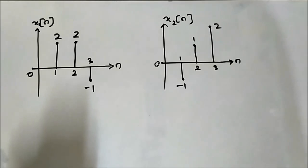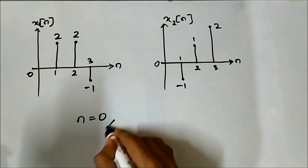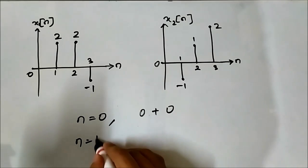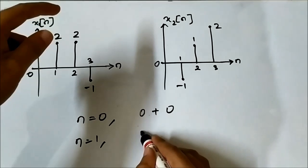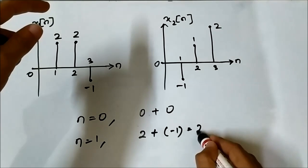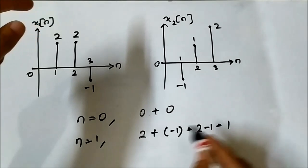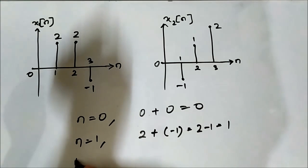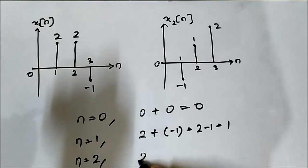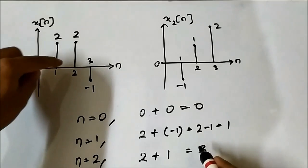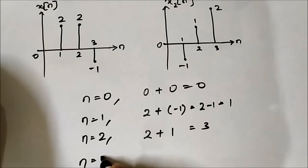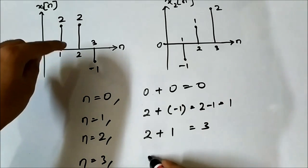We simply perform addition at the respective points. At n=0 it is 0 plus 0. At n=1 it is 2 plus 1, which equals 3. At n=2 it is 2 plus (-1), which equals 2 minus 1, which equals 1. At n=3 it is 2 plus 1, which equals 3.